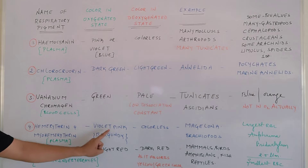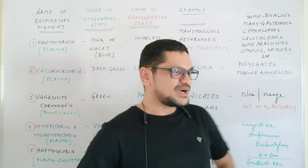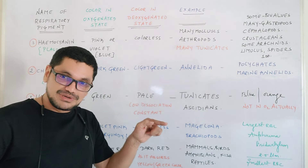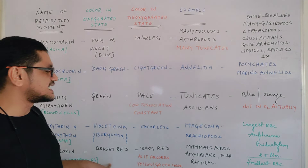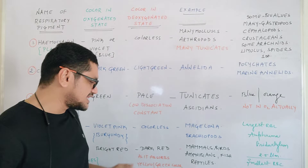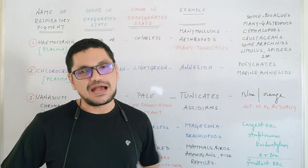The last but not the least is hemoglobin, which we are quite familiar with. Hemoglobin is a respiratory pigment. In vertebrates, in oxygenated state the coloration is bright red, and in deoxygenated state it is dark red. The reason for the dark red color is that it absorbs yellowish and greenish wavelengths. It is present in Pisces, amphibians, reptiles, birds, and mammals, and hemoglobin is an excellent carrier for oxygen transport.